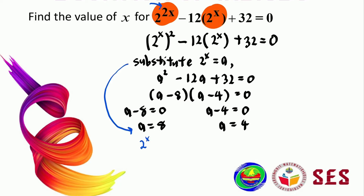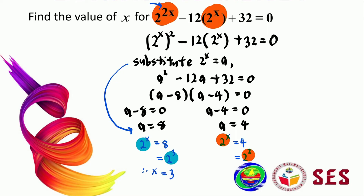Substituting back: 2 to the power of x equals to 8, and 2 to the power of x equals to 4. We know that 8 equals 2 to the power of 3, and 4 equals 2 to the power of 2. Both sides now have the same base, so by comparing powers, x equals to 3 and x equals to 2.